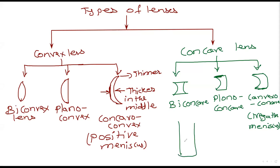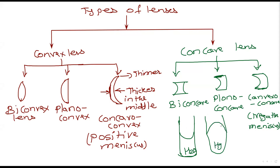What is a meniscus? When you take water in a thin test tube, the free surface is not flat — it curves upward at the edges. For mercury it is the opposite — it curves downward. This curved shape is called the meniscus. That is all — positive for water-like curves, negative for mercury-like curves.